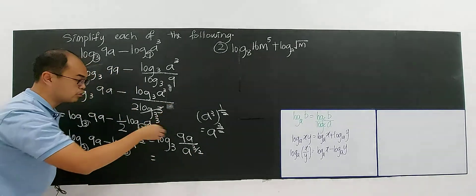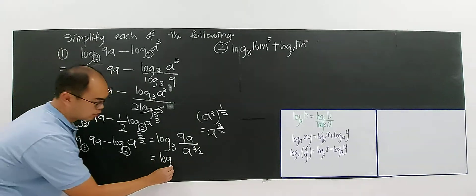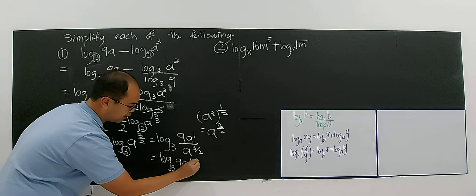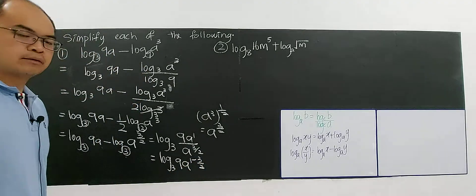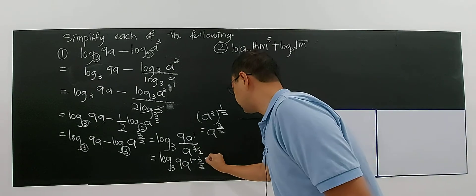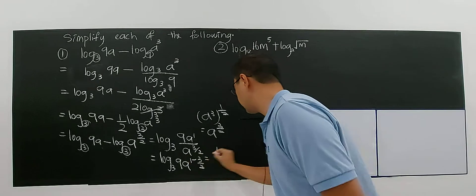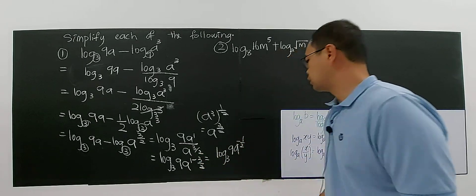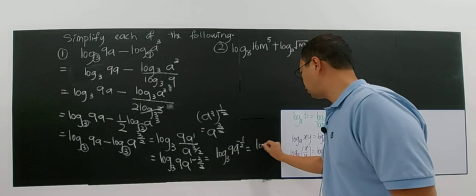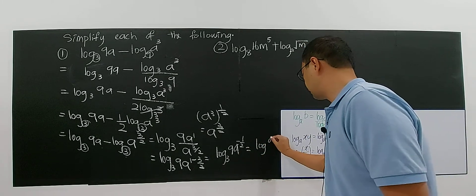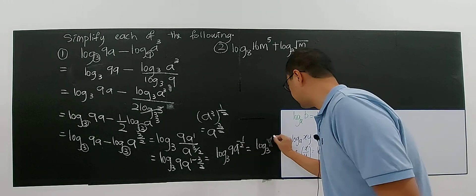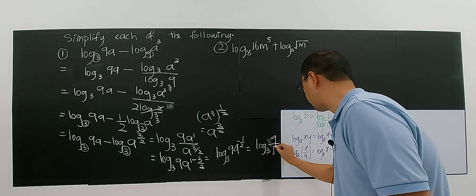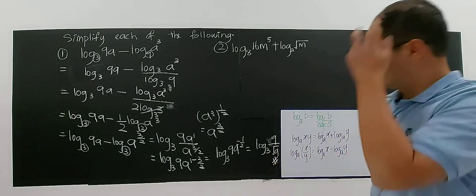Now you have already applied all the log formulas. Now it's time to apply the index law. So 9, and A to the power 1 divided by A to the power 3 over 2 means 1 minus 3 over 2, which gives you negative 1 over 2. So you get log base 3 of 9 times A to the power of negative 1 over 2. You can simplify this further: become log base 3 of 9 divided by A to the power of 1 over 2, which is the square root of A. So this will be your answer.